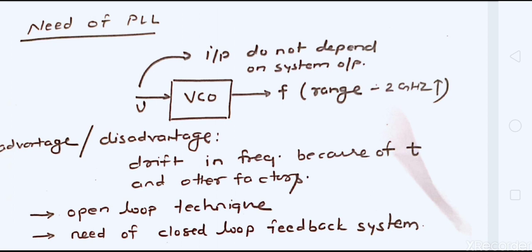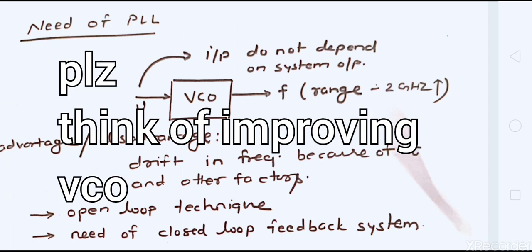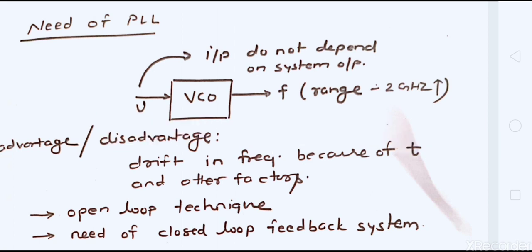A varying frequency would be a terrible condition in any communication block — you cannot afford to have a varying frequency in a communication oscillator or mixer. So what we do is, this being an open-loop technique, we employ a closed-loop technique. In a closed-loop feedback system we can keep the output constant.